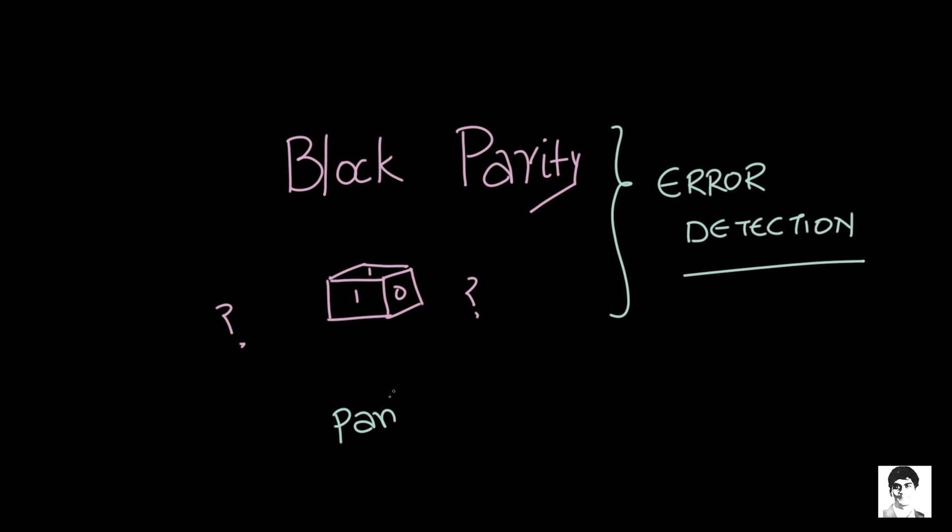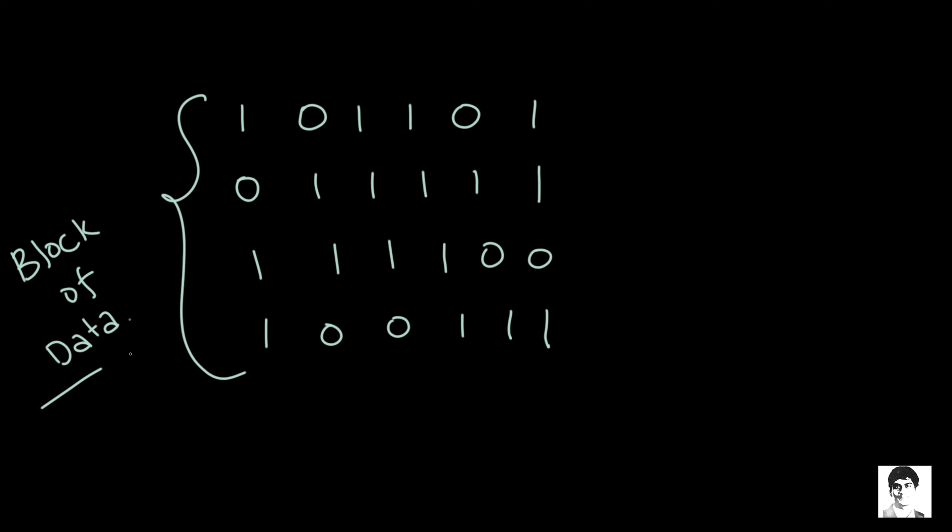So in this video we are going to look at what this block parity code is for error detection. So let us say instead of transferring one binary word like we did earlier, we are transferring multiple words, a block of binary words.